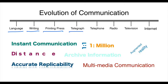Electricity led to the invention of the telegraph, which meant instantaneous communication, but this was one-way communication. Then came the telephone, which was also instantaneous communication but two-way — still one-to-one though. Radio led to broadcast of audio communication, and then television meant you could broadcast not only sound but also images and video — essentially audio-video communication.